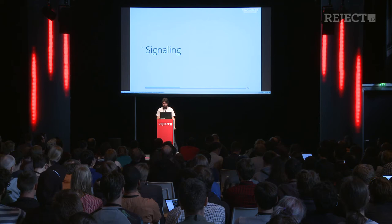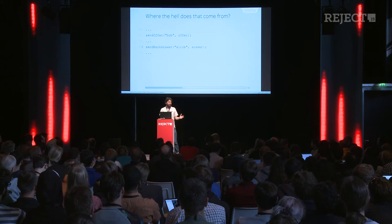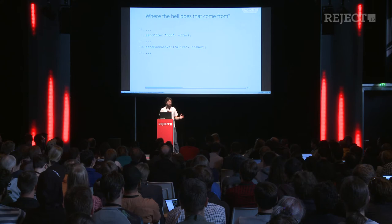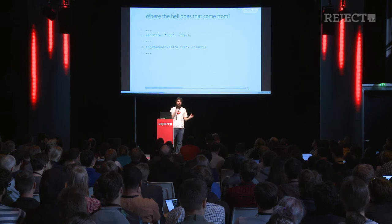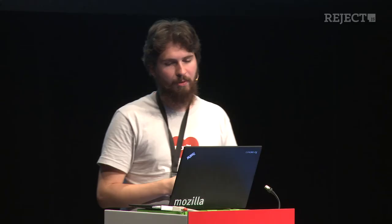Now we will discuss about signaling. In the previous code, I used two functions — and what the hell are those exactly? They are placeholders, simplifications in the code where the signaling happens. That's the piece of code you will probably write yourself.